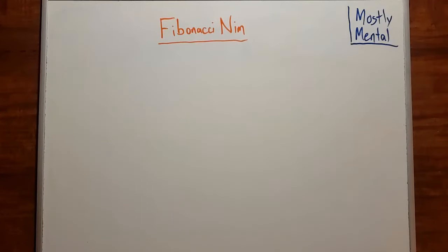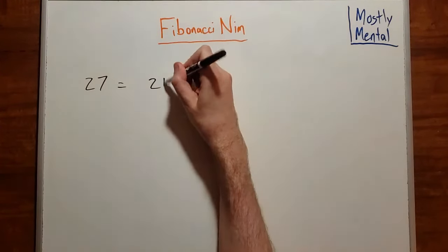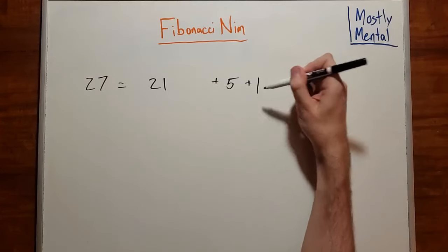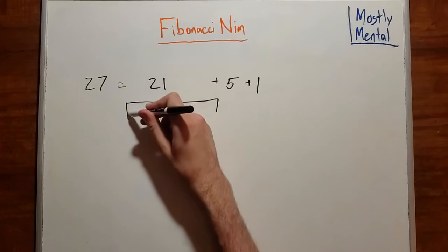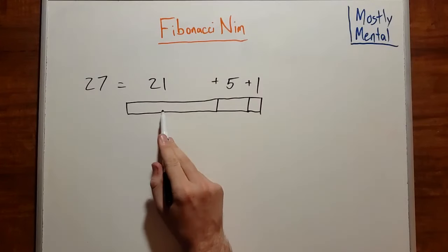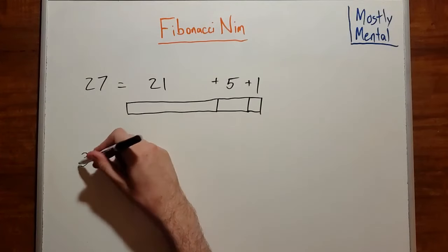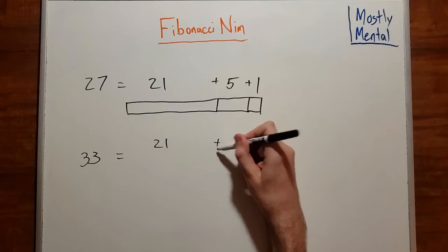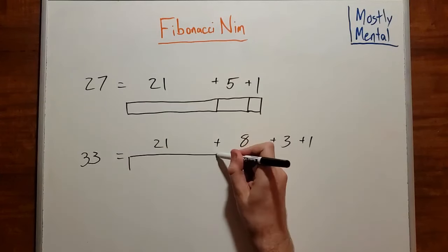This is all a bit abstract, so let's build some intuition for these Zeckendorf representations by drawing a picture. Say we have a number like 27, which is 21 plus 5 plus 1. We can draw this as a row of rectangles of the corresponding lengths and height 1. So these have lengths 21, 5 and 1, and the total length is 27. And we can do the same for any other number. So 33 would be 21 plus 8 plus 3 plus 1.